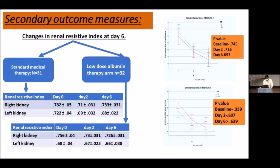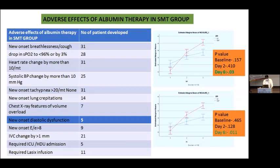The primary outcome of new AKI progression or resolution by day seven: resolution was seen in 28% in the standard medical therapy arm and 27% in the interventional arm, with no clinically significant difference at day 3 or day 6. Changes in renal resistive index showed no clinically significant change in either arm. Regarding adverse effects, almost everyone in the standard medical therapy arm developed new onset breathlessness — 31 patients had tachypnea of more than 20 breaths per minute, 14 patients developed lung crepitations, 5 patients required ICU admission, and 11 patients required Lasix infusion to control breathlessness.